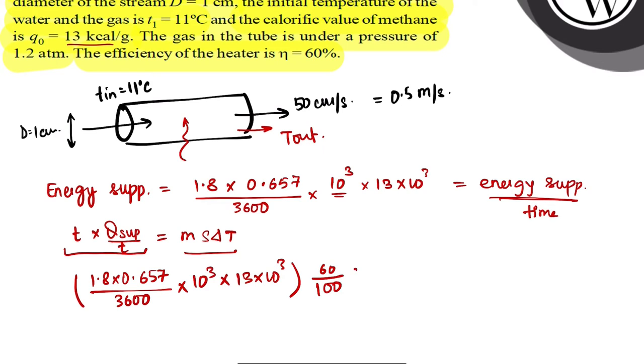This will be equal to m·s, mass to volume into area, right? Velocity into area, mass flow rate into density here. Velocity into area into density into s into ΔT. So v × 60/100 m per second into area π(d/2)² into density of water 1000, specific heat 1 for water, and temperature t - 11 here.